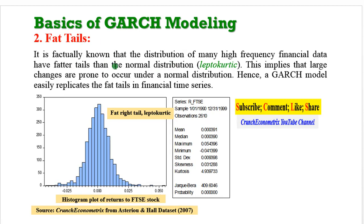How about the second one, fat tails? It is factually known that many high-frequency financial data have fatter tails—that is, they are leptokurtic—than normal distribution. Therefore, a GARCH model will easily replicate fat tails in financial time series. Here is a histogram of the plot of the FTSE stock, and we can see that the tails are fat. This series is clearly leptokurtic.